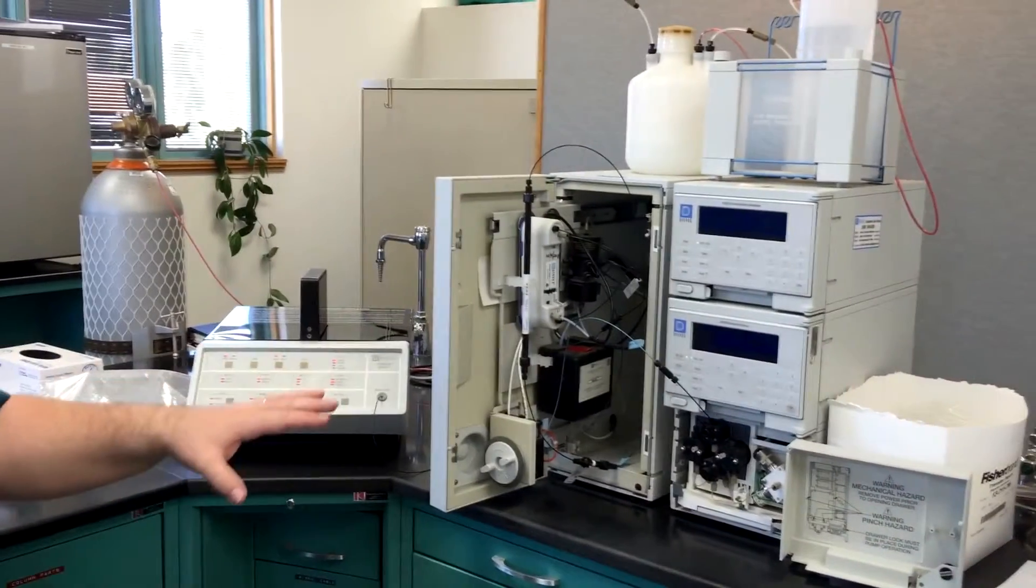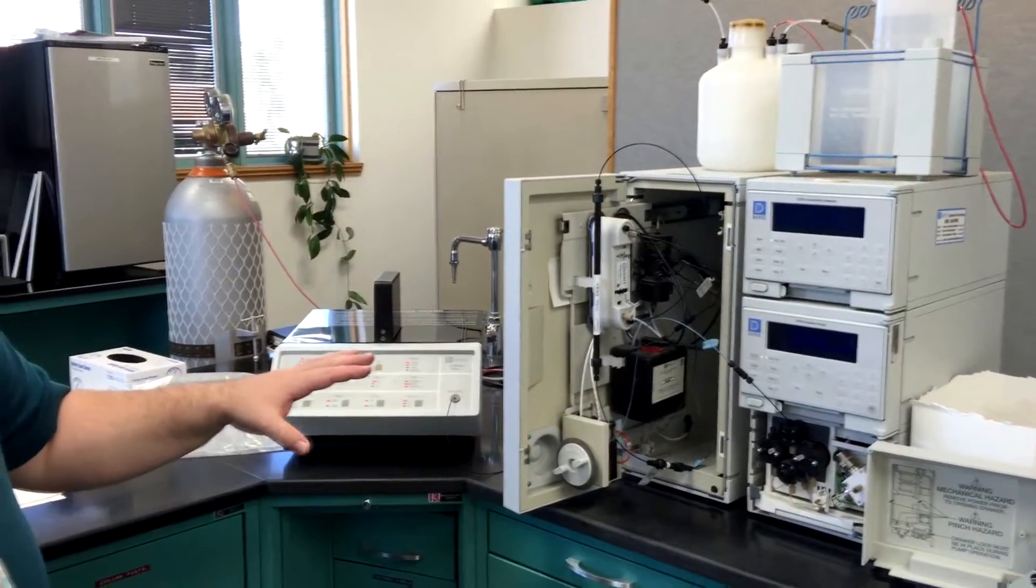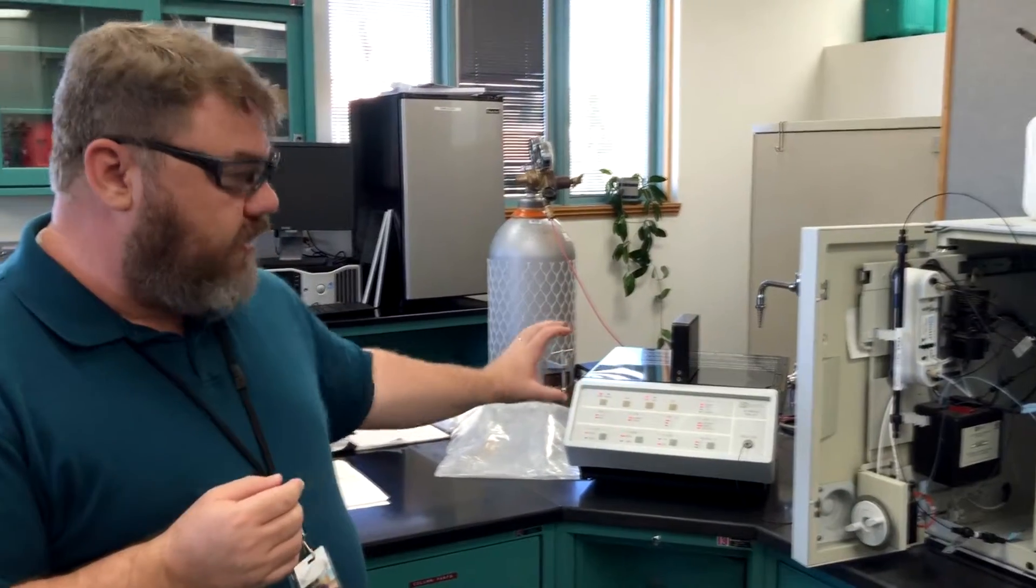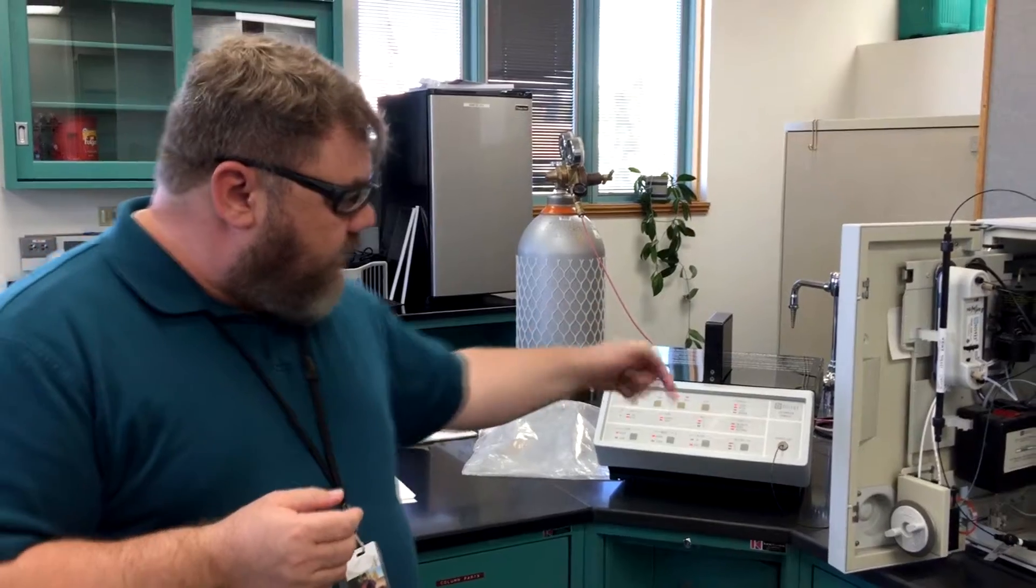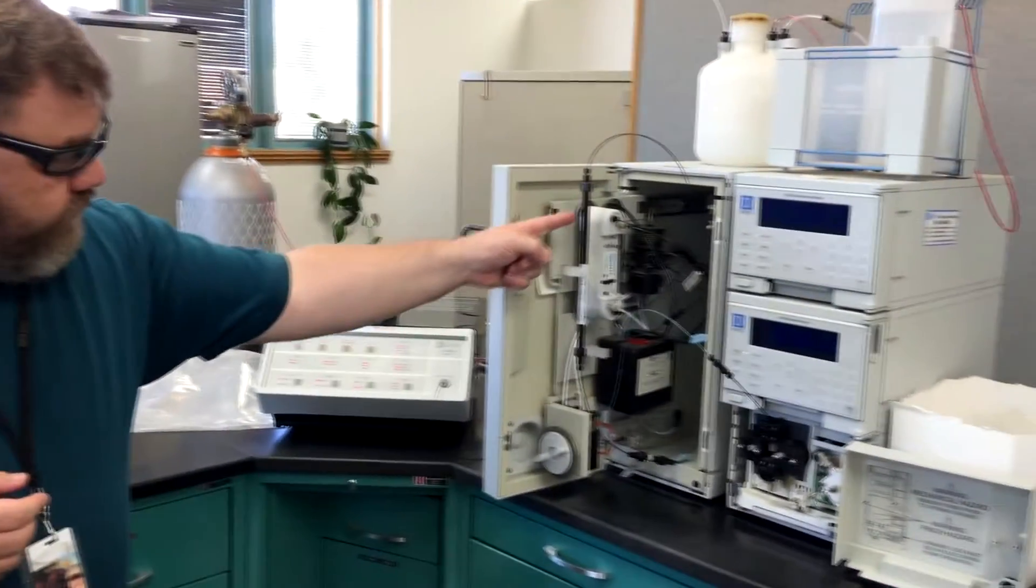This is an ion chromatograph. What this does is you take a sample of water, in our case drinking water or raw source water, and the sample goes through this column.